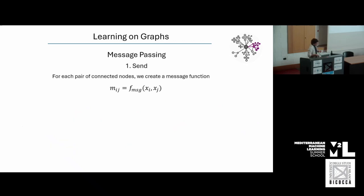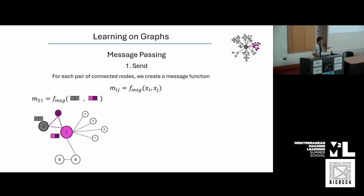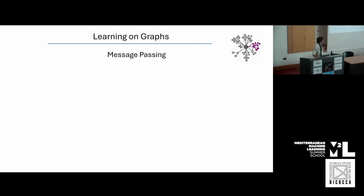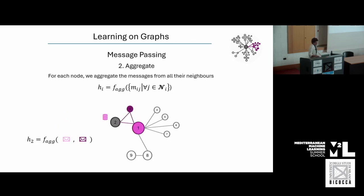In the first step — the sending step — if we look at node 2, we'll generate two messages, one for each connection: message 2→1 and message 2→3. The message function can be literally anything; that's what will define the different architectures in the GNN world. It's a function that takes into account the two nodes that are interacting. Then in the aggregate step, once we've generated the messages, we use another function to aggregate them, giving us an updated embedding for node 2.